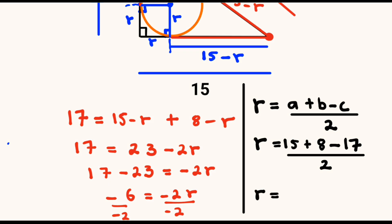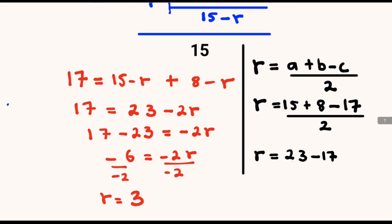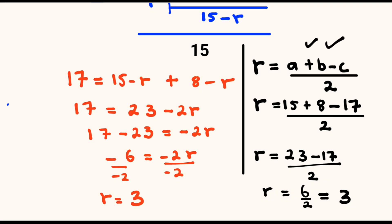and the hypotenuse is equal to 17. This is divided through by 2. Our radius will be equal to 15 plus 8, which is 23, minus 17. So 23 minus 17 is equal to 6, divided by 2. Our radius will be equal to 3. You can also use this formula to determine the radius of a circle inscribed inside a triangle.